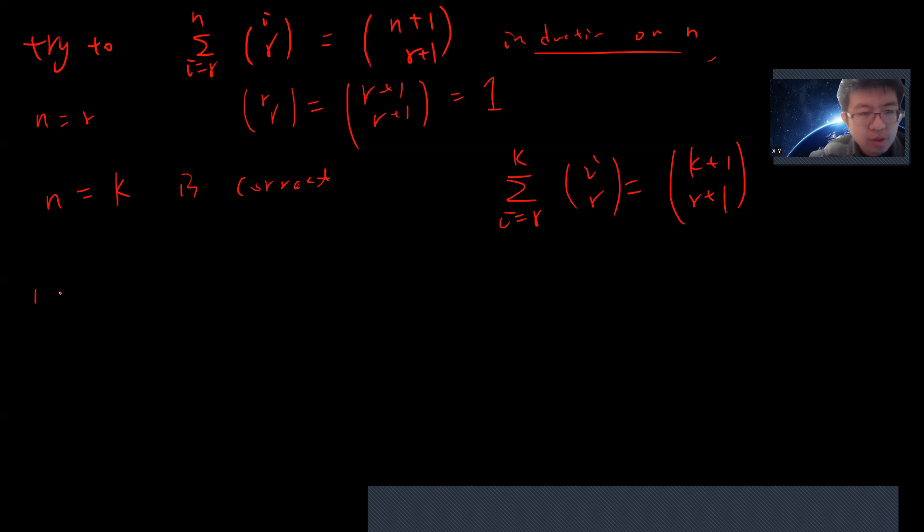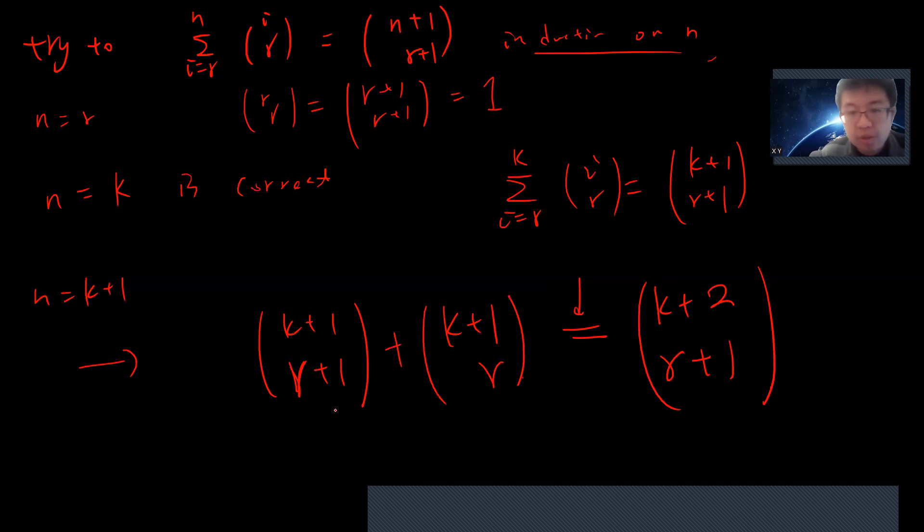I consider n=k+1, and this is simple because it's just adding another term. You just ask whether (k+1 choose r+1) + (k+1 choose r) equals the next term, which is (k+2 choose r+1). And one can check this is basically Pascal's identity, or it's elementary to prove by yourself. You can prove this is true. This is Pascal's identity, you can try to prove it, it should be very simple. So see you guys in the next videos.